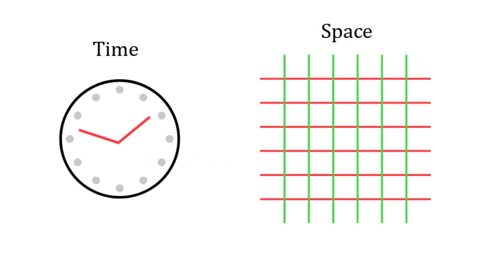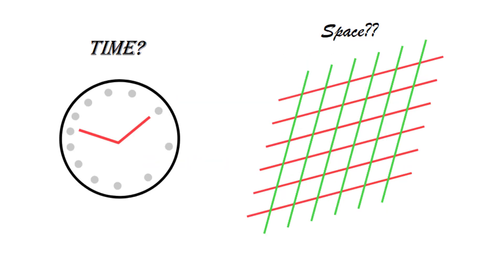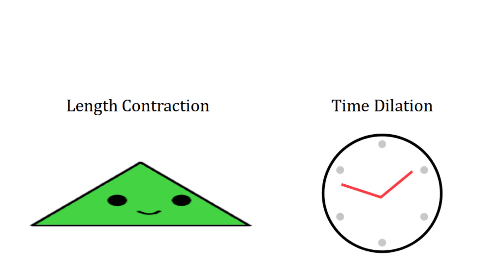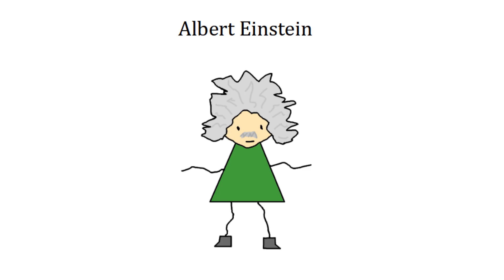To put it simply, relativity is the idea that time and space behave differently depending on your perspective. It has many consequences including length contraction and time dilation. It was famously worked on by Albert Einstein, who is basically the smartest person of all time, at least in public perception.